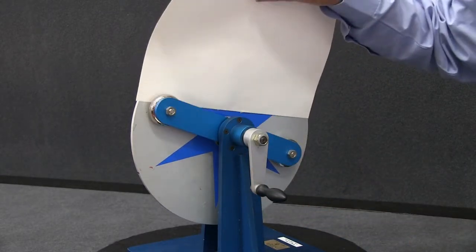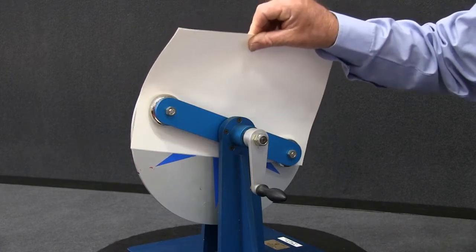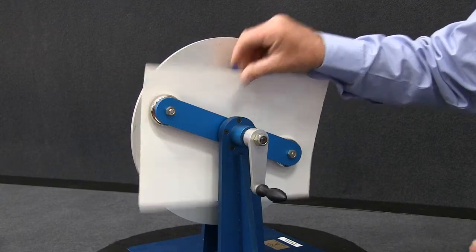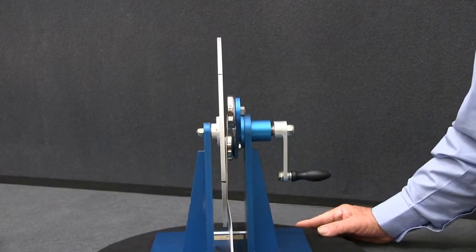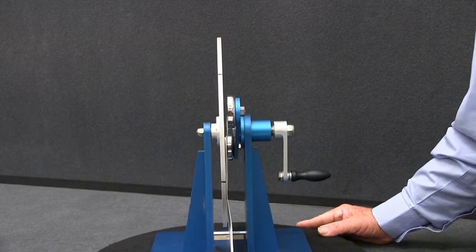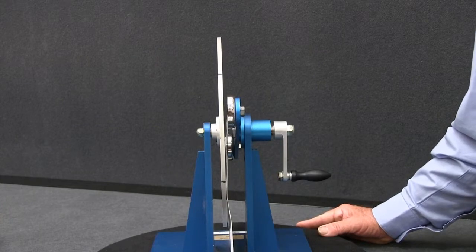The magnets do not touch the aluminium disc. If you look carefully in this direction, you can see the gap between the magnets and the disc.